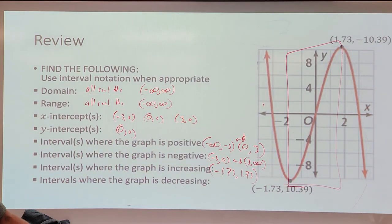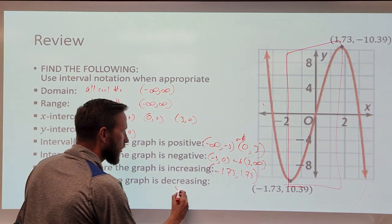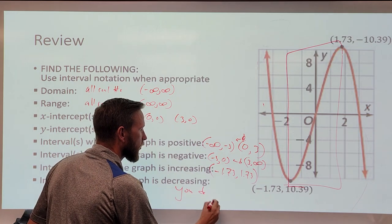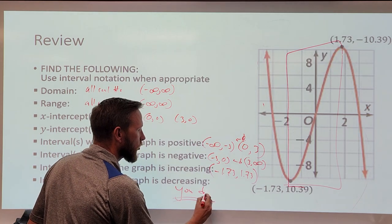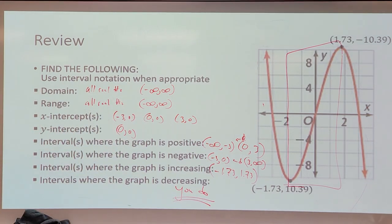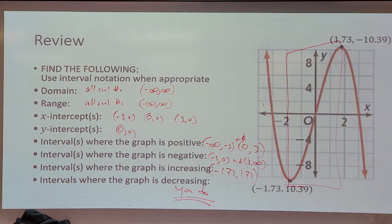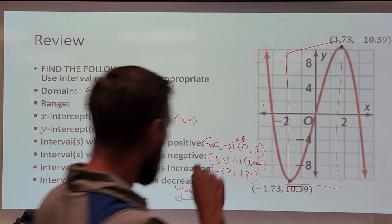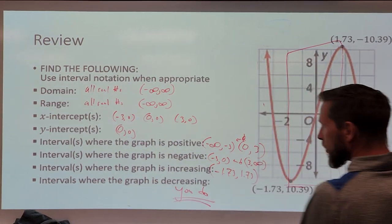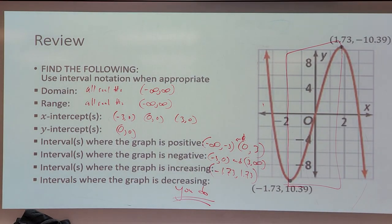Where is the graph decreasing? You've got two spots. Hopefully you're able to think through all of those things, tying both lessons together — finding domain, range, intercepts, positive, increasing, negative, and decreasing — so that you can connect those dots.